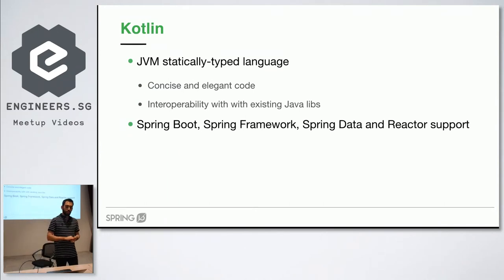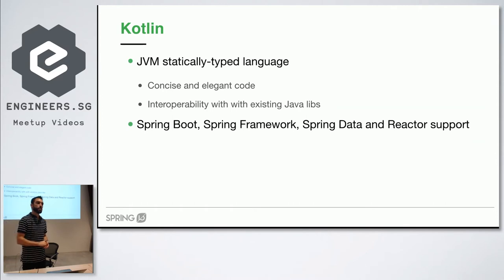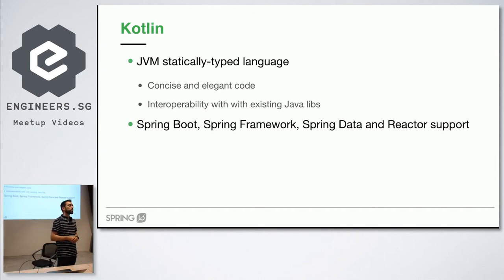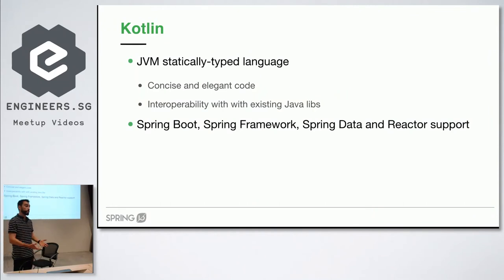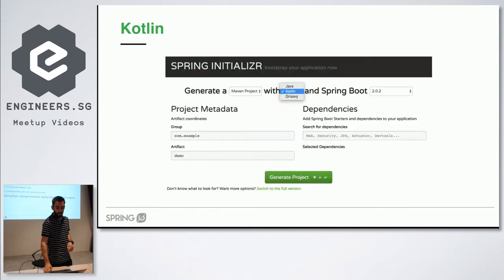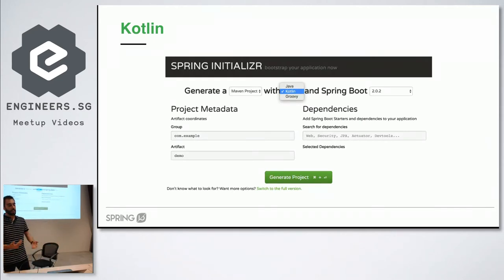Another thing getting a lot of traction is Kotlin support. Kotlin has a lot of traction in the Android community and in Gradle as well. Spring 5 is embracing Kotlin — when you go to the Spring Initializr, you can select Kotlin as a language alongside Java and Groovy. It's a JVM language that's more concise, statically typed, and produces more elegant code. Currently Spring Framework, Spring Boot, Spring Data, and the Reactor project all support Kotlin.